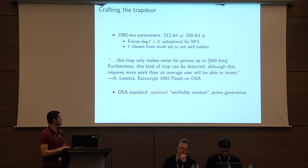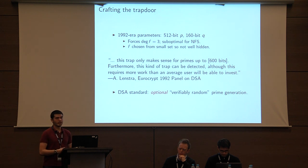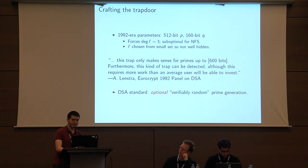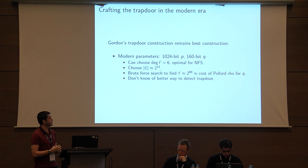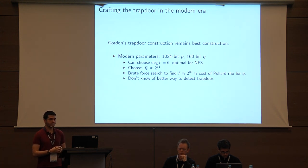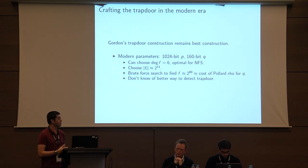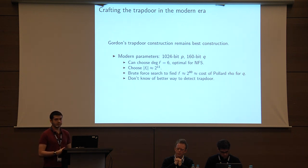How about today? People are using DSA primes with 1024 bits and 160-bit prime order subgroups, and this is actually optimal for Gordon's construction. This allows you to choose a degree 6 polynomial — good for the number field sieve — and also allows large enough coefficients for polynomial f such that enumerating all possible polynomials would be very expensive, equivalent to the cost of running Pollard Rho for subgroup Q. So it's certainly possible to construct such a prime using the same algorithm Gordon published in 1992, and we want to show it would actually be possible to exploit such a prime.